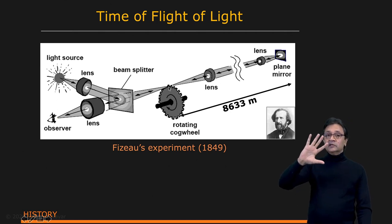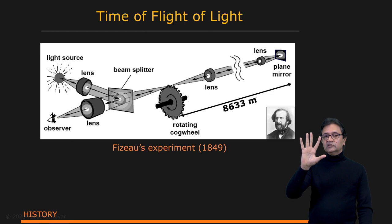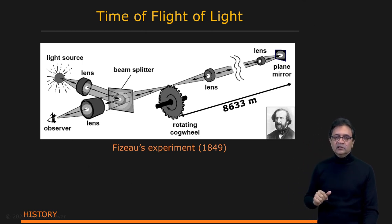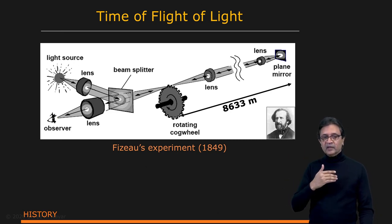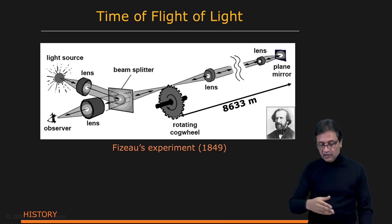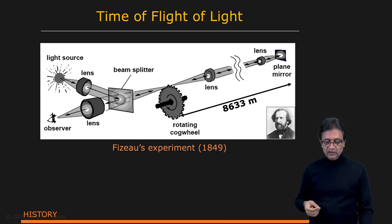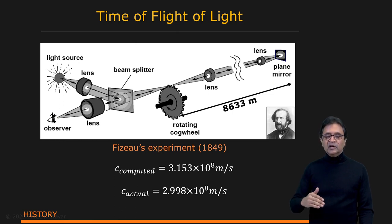But by the time it travels back, for a certain speed, the cog wheel would have turned so that now you have a tooth that obstructs the light coming back in. So there's a certain speed of rotation of the cog wheel for which no light ends up making it back to the observer. By using the rotation speed for which that happens and all these other dimensions in the experiment, he was able to figure out the speed of light. Really remarkable. What he came up with is 3.153 × 10^8 meters per second.